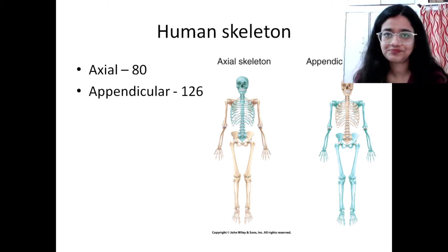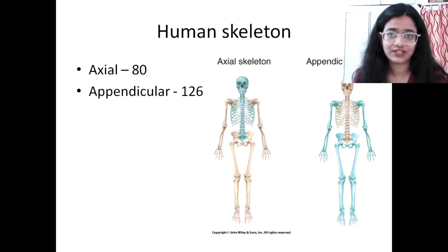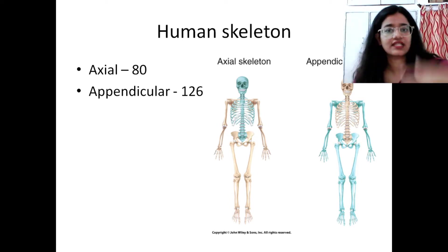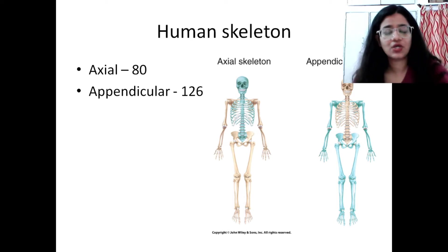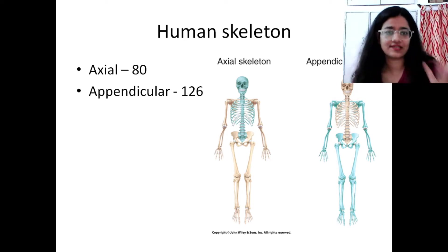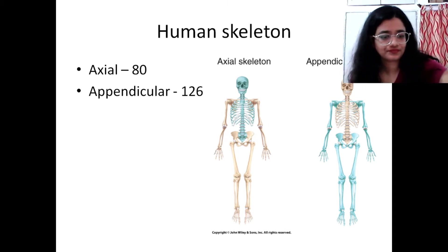The human adult skeleton has 206 bones. It is divided into axial and appendicular. Axial means the axis or main part, which has 80 bones comprising the skull, vertebral column, and ribs. Appendicular comes from the word appendages meaning limbs, and has 126 bones connected to the axial bones via different joints.